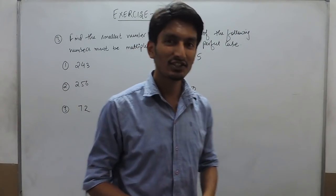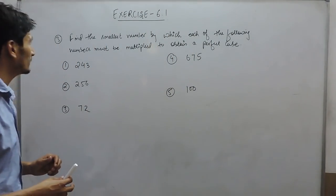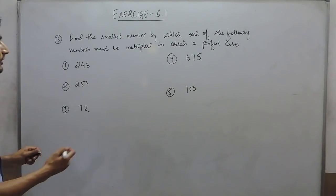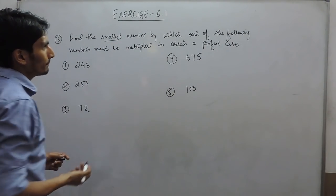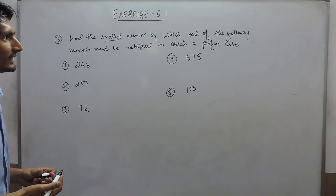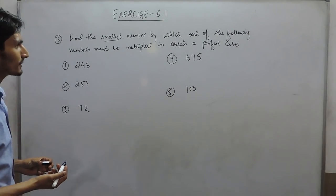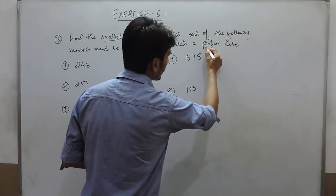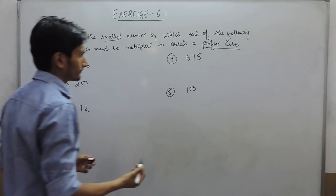Hello everyone. In this video we are going to explore question number 3. In question number 3, you have to find the smallest number by which each of the following numbers must be multiplied to obtain a perfect cube.